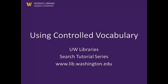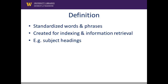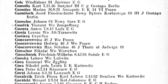Controlled vocabulary are standardized words and phrases that have been created for purposes of indexing and information retrieval in the context of a catalog or database. Examples of familiar types of controlled vocabulary include subject headings and author names. A book index is another good place to find controlled vocabulary, as are the way names are listed in a phone book.